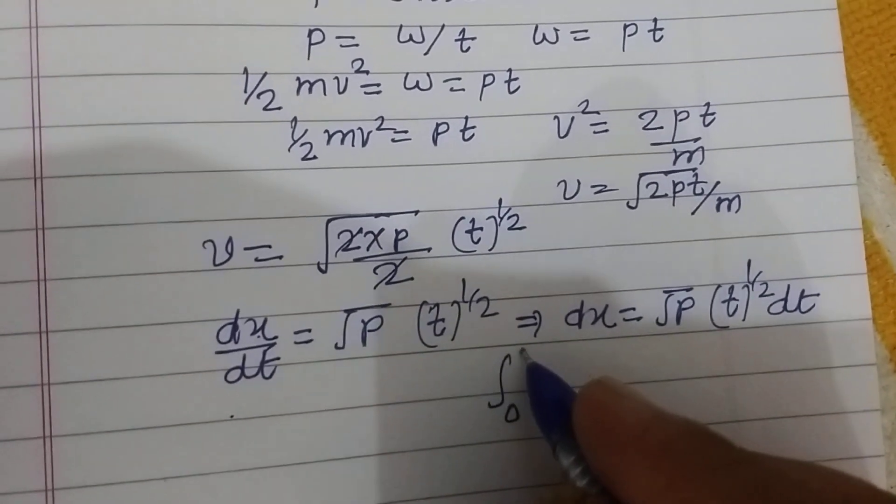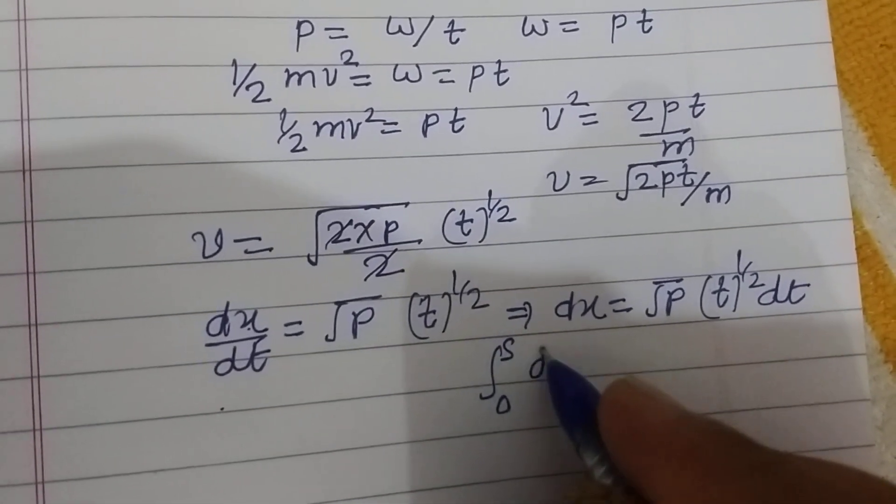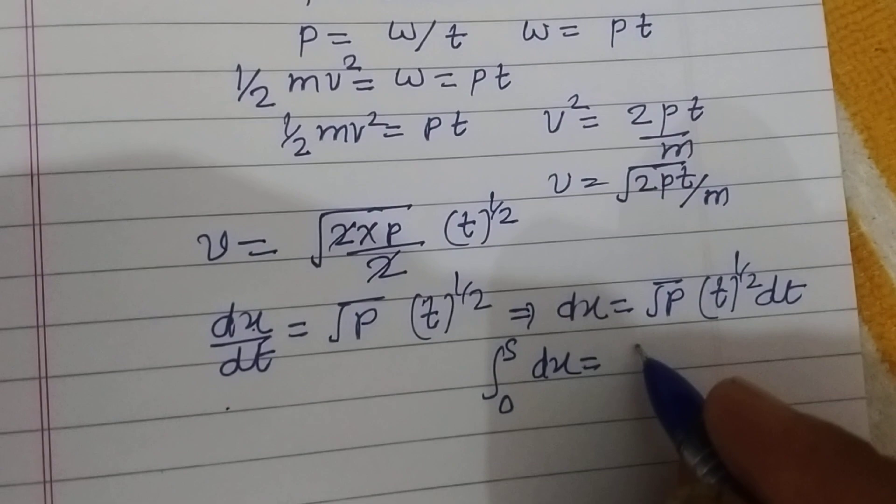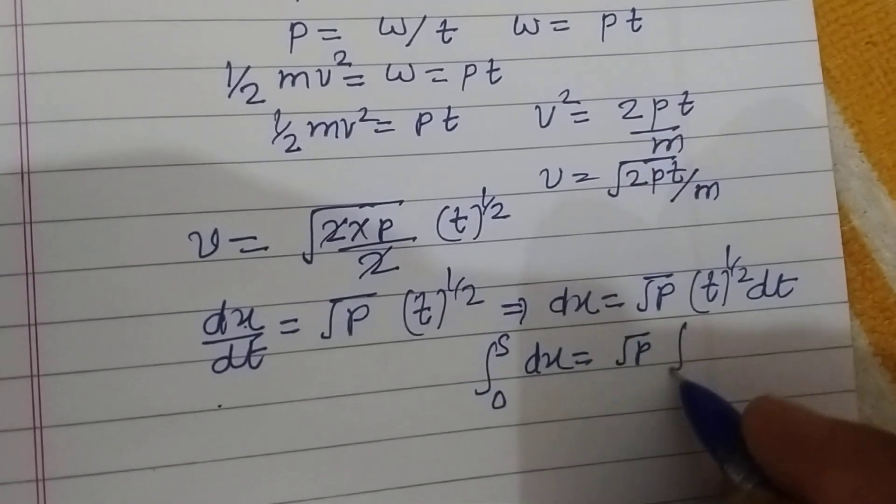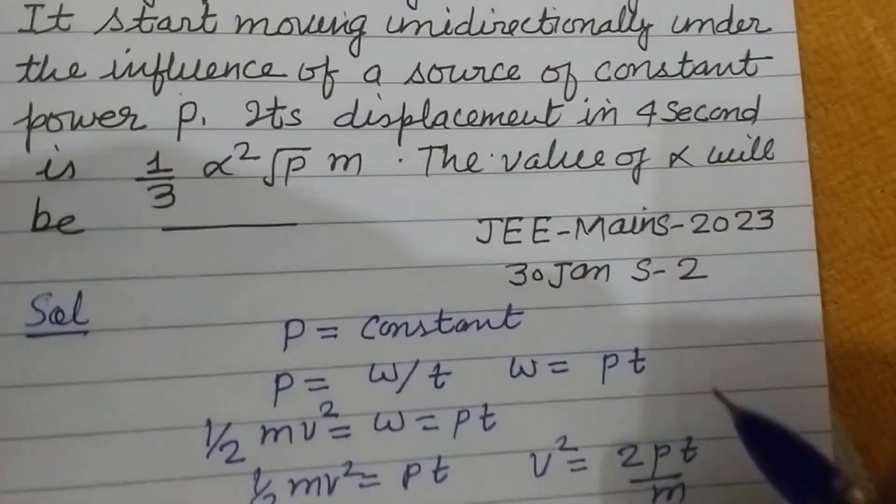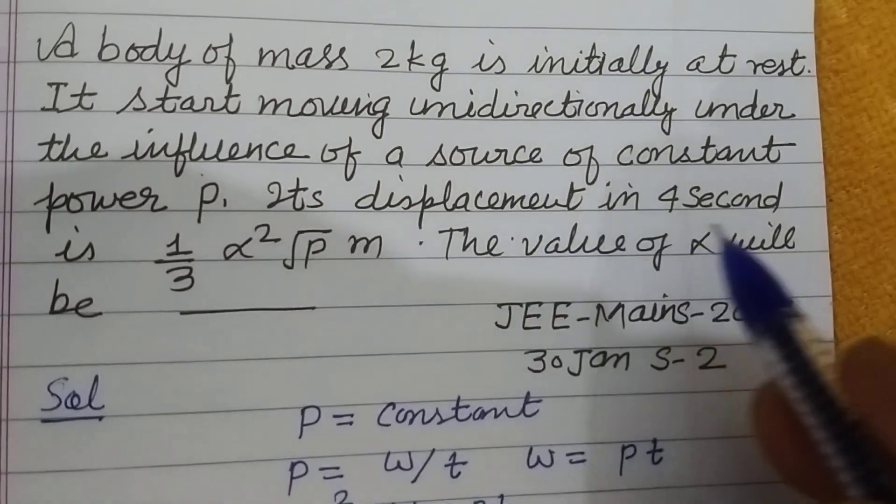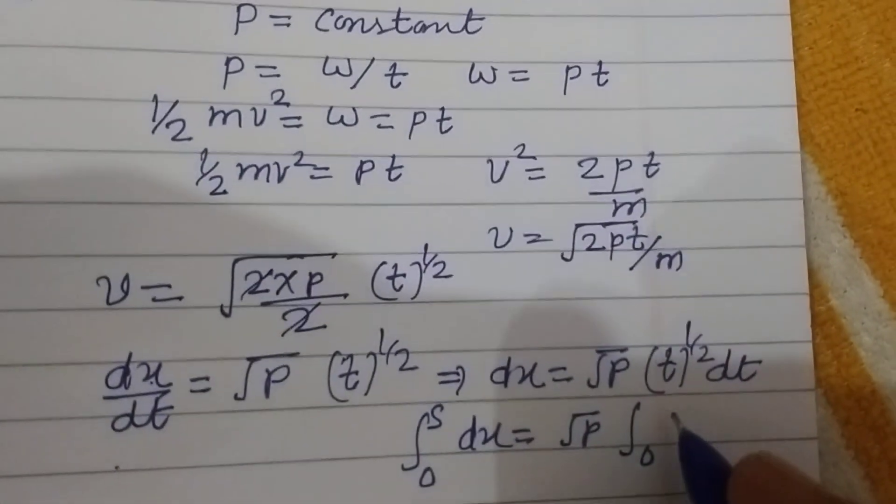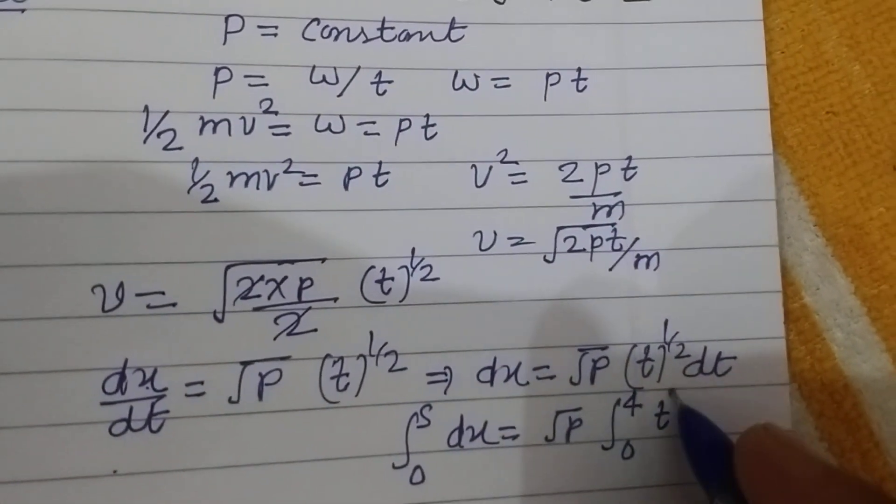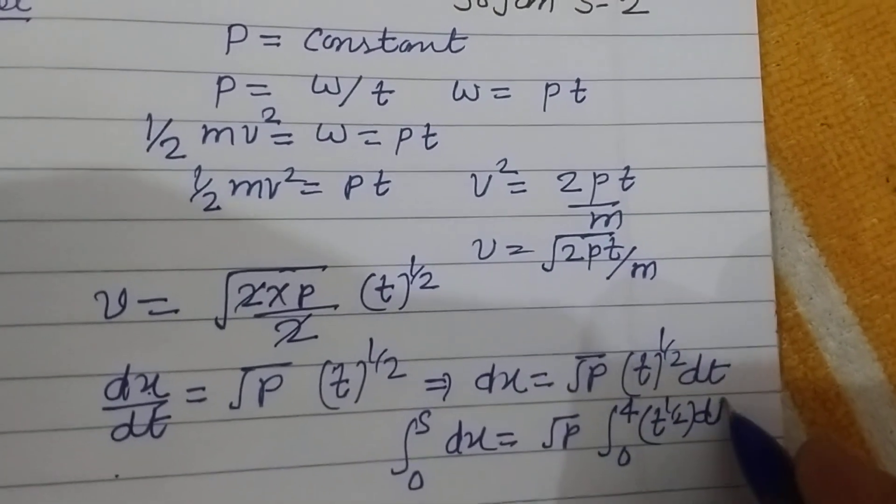let this displacement be s, 0 to s, in time 0 to 4. The question is saying displacement in 4 seconds, so 0 to 4, T to the power 1/2 dt.